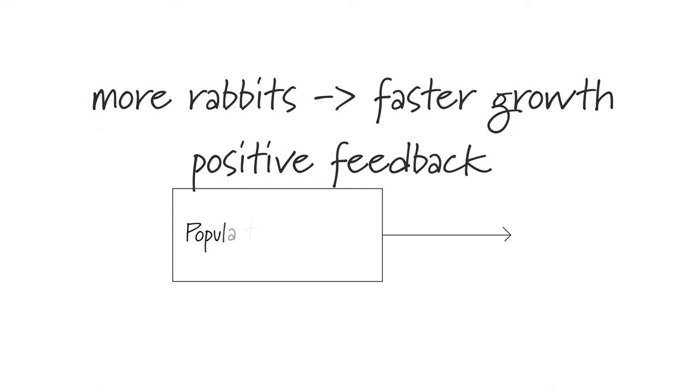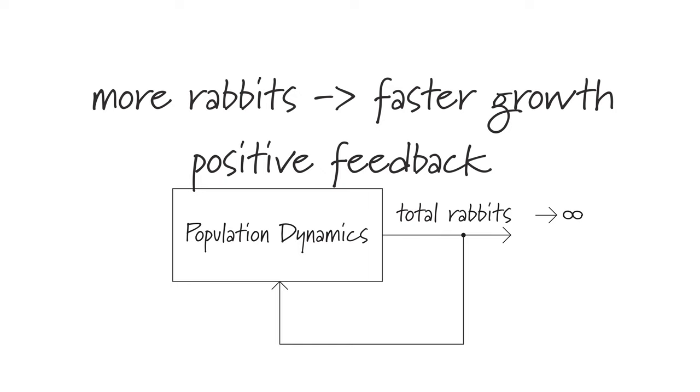In this very simplified model of rabbit colony population dynamics, the number of rabbits will blow up to infinity. In other words, this is an unstable system. In summary, positive feedback tends to cause instability, while negative feedback tends to promote stability.